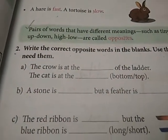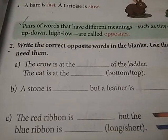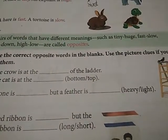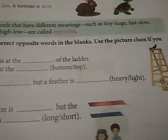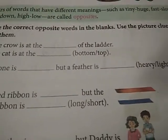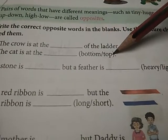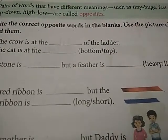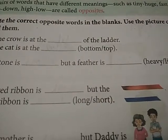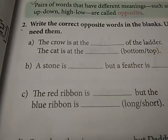Now come on the exercise. Write the correct opposite words in the blank. Use the picture clues if you need them. Aapko picture clues diye hue hain aur aapko words diye hue hain. These are the words given to you for your answer and we will choose the correct one from these brackets. Clear beta? Chaliye, start karte hain.